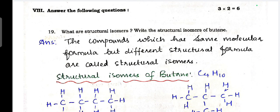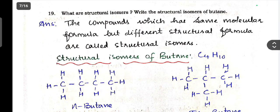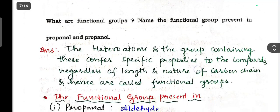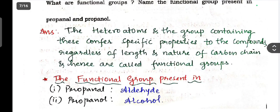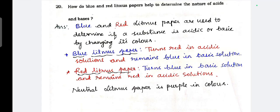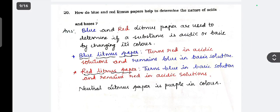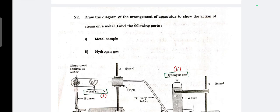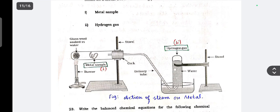Next, two more questions. What are structural isomers? Write the structural isomers of butane. Or what are functional groups? Name the functional groups present in propanol and propanone. Question number 20. Write any two differences between saturated hydrocarbons and unsaturated hydrocarbons. Draw the diagram of arrangement of apparatus to show the action of steam on metal. Label the following parts: metal sample and hydrogen gas. This is the diagram you have to draw.